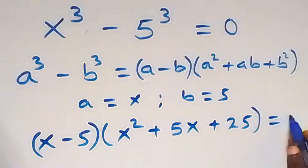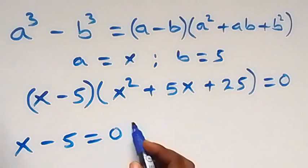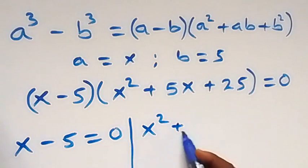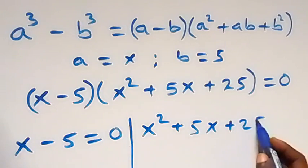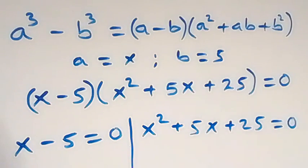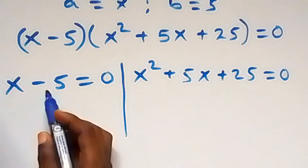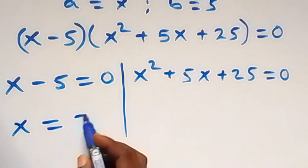Now this equals 0. Here we have two cases: x minus 5 equals 0, or x squared plus 5x plus 25 equals 0. Taking minus 5 to the other side, we have x equals 5.